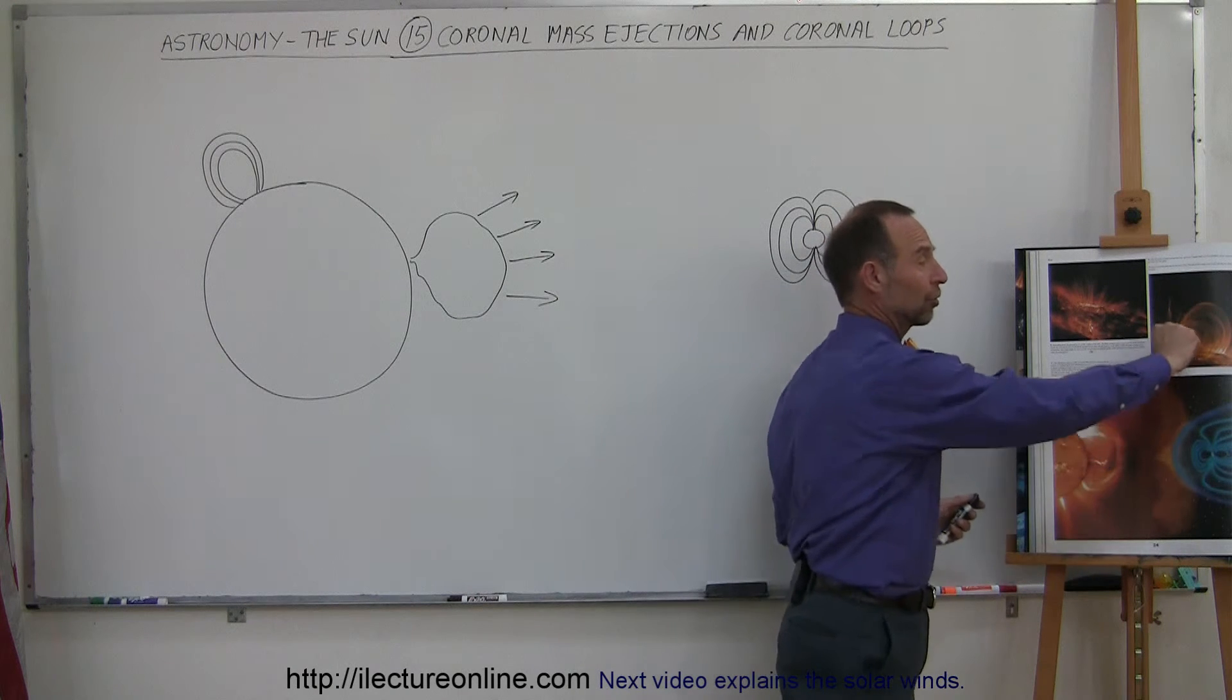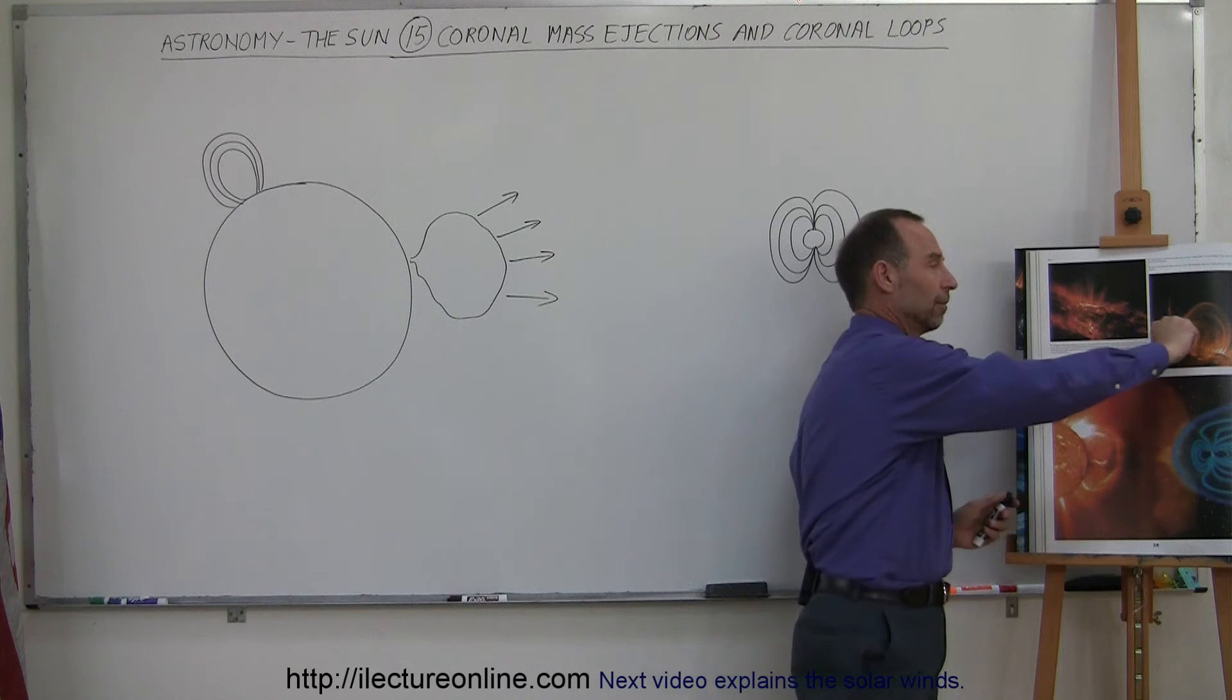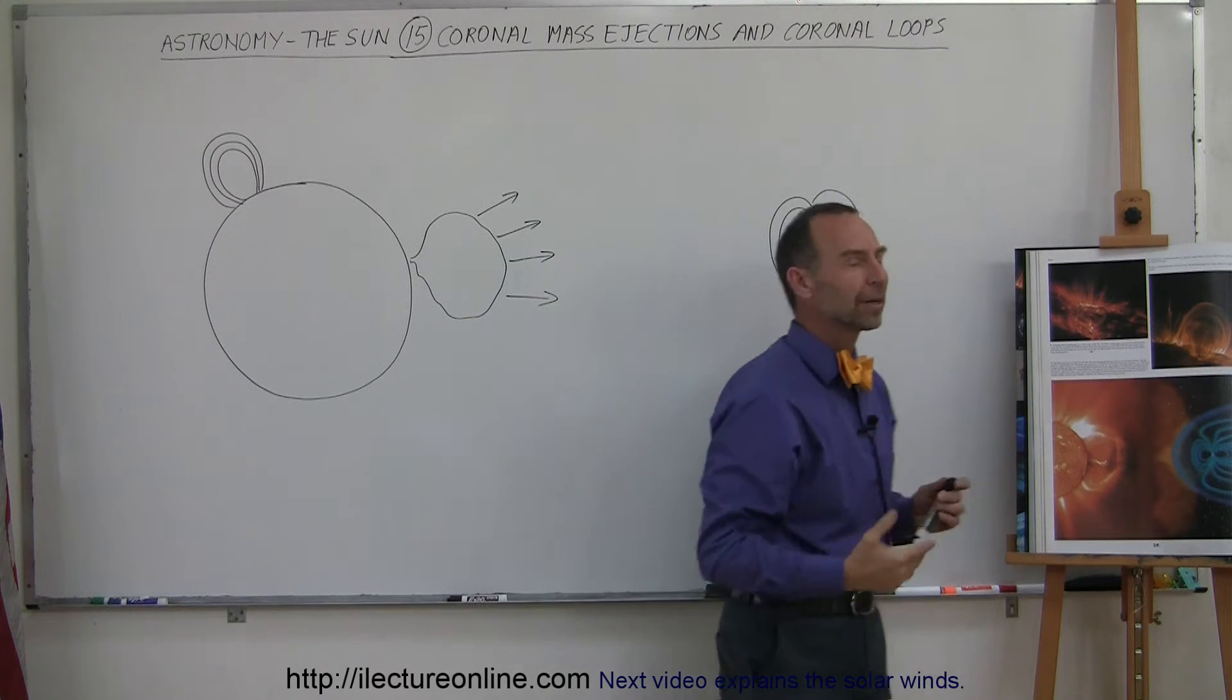And notice these nice little loops that come up. Well, they're not little loops, they're huge. The Earth will just be a small little sphere right there in comparison to loops. So they're way, way bigger than the Earth.